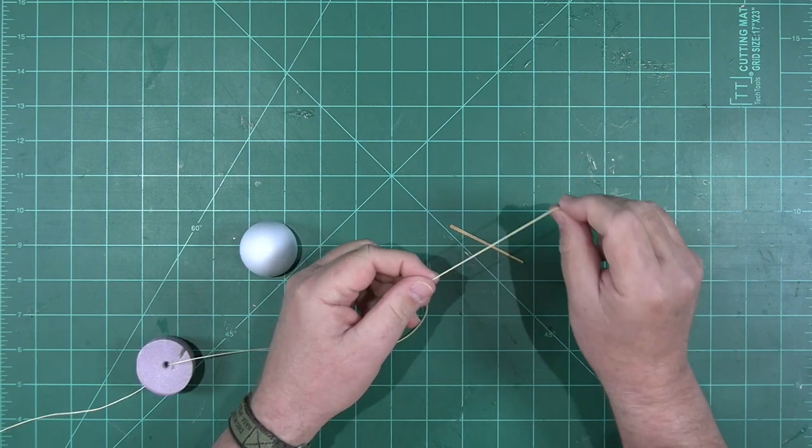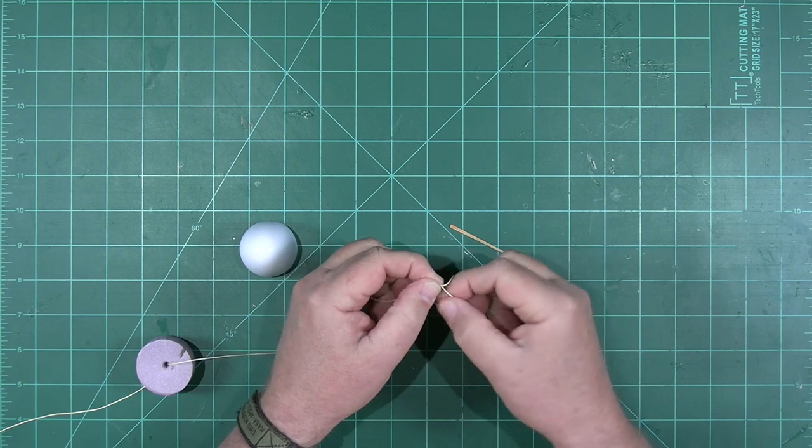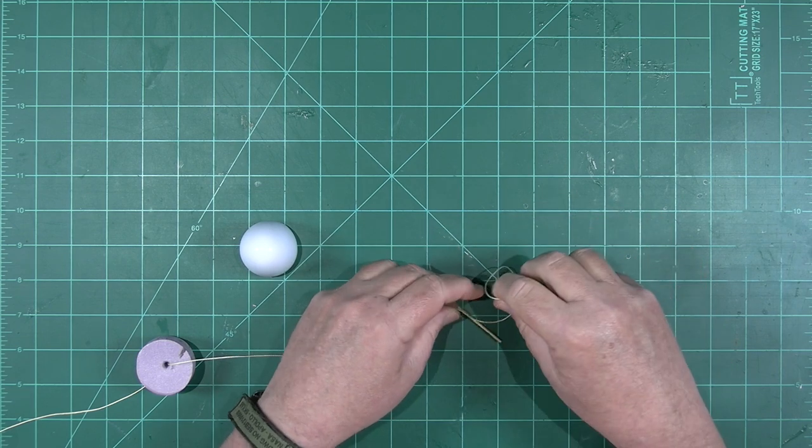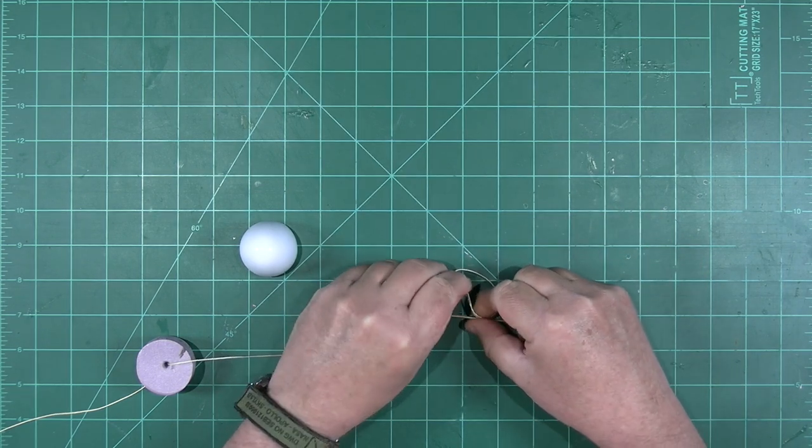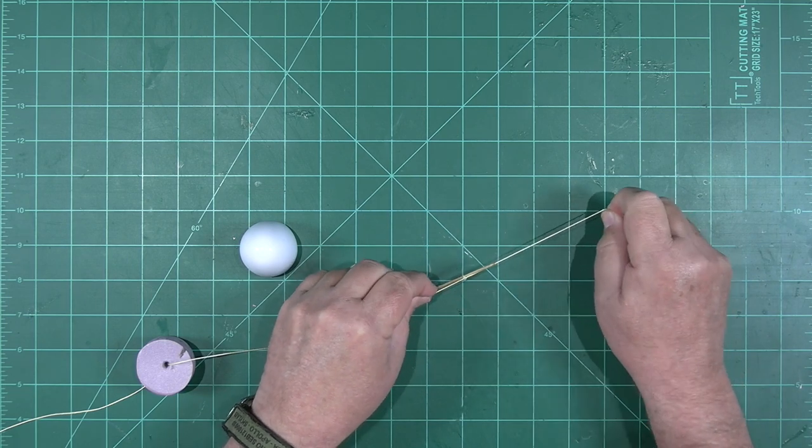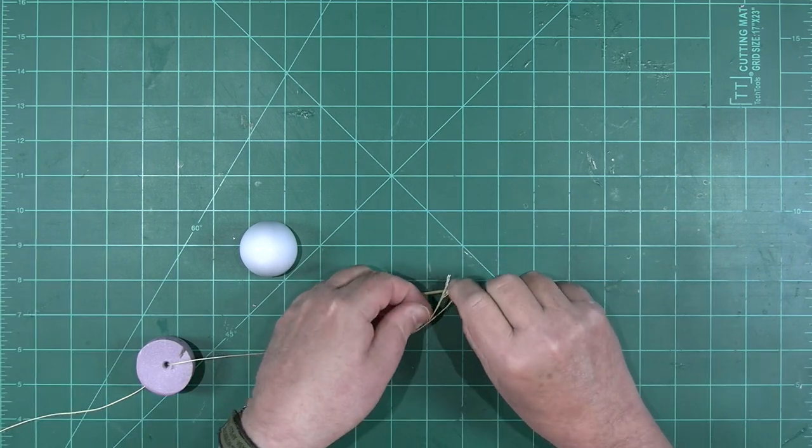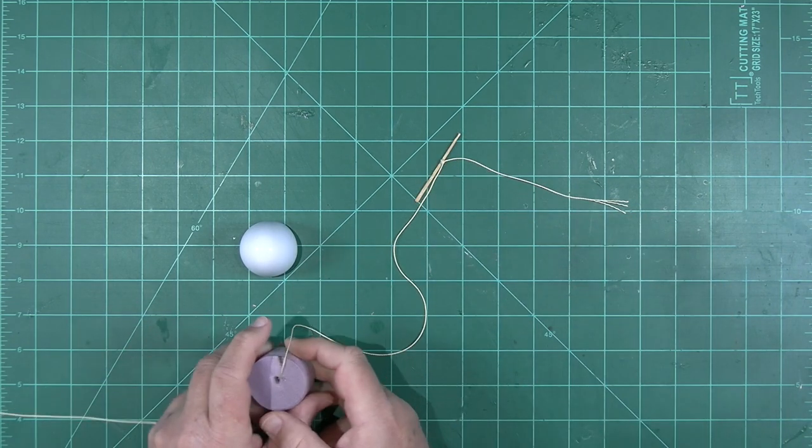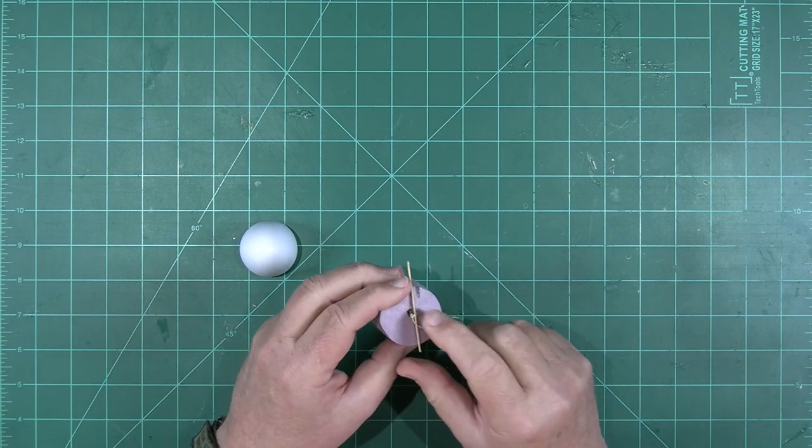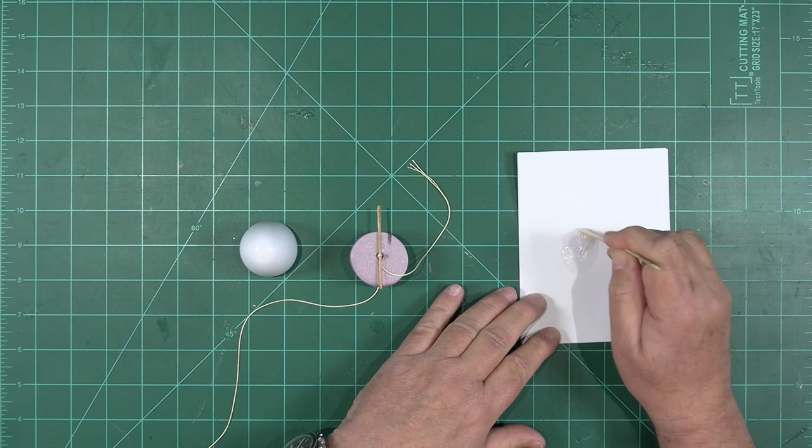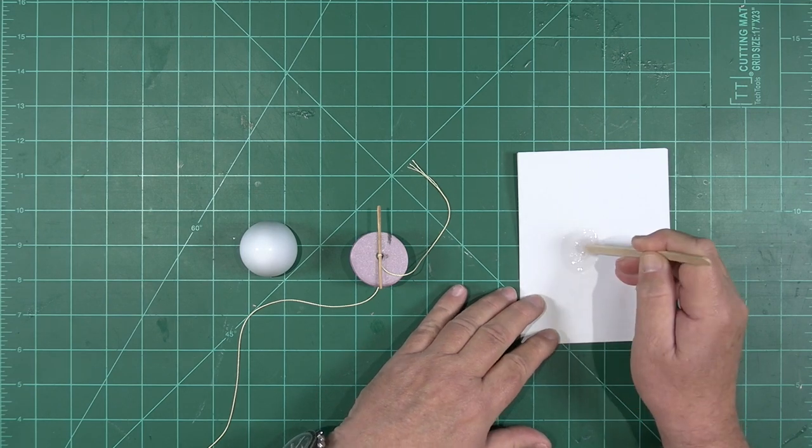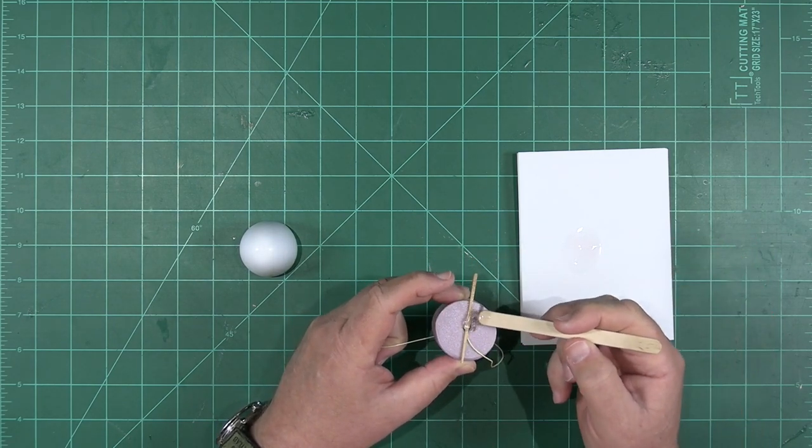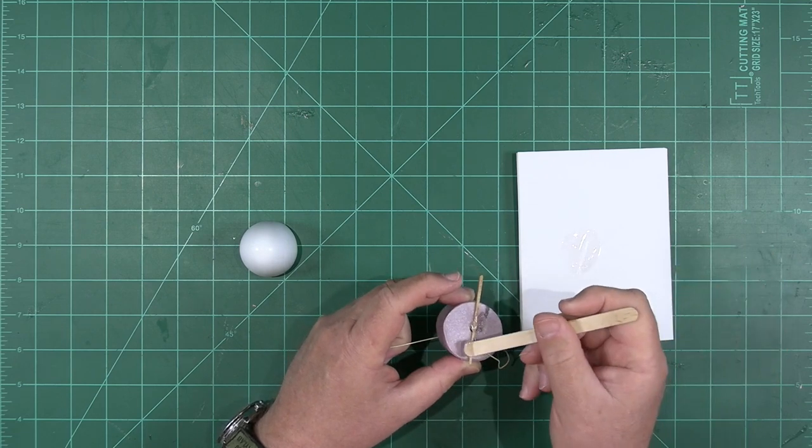The next thing we're going to do is to tie the shock cord around the midpoint of the toothpick. We'll create a couple of simple loop knots, and then we'll pull that tight against the top of the nose cone shoulder.